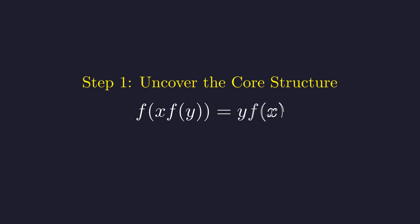We begin with the original equation. Let's substitute x equals 1 to see what happens. Setting x to 1 isolates the behavior of the function related to the variable y. This substitution immediately simplifies the left side. The term f of 1 is just some constant value. Let's call this constant f of 1 by the name c.